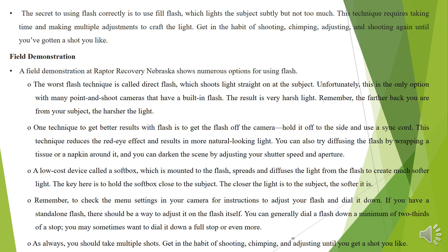You can also try diffusing the flash by wrapping a tissue or a napkin around it, and you can darken the scene by adjusting your shutter speed and aperture. A low-cost device called a softbox, which is mounted to the flash, spreads and diffuses the light from the flash to create much softer light. The key is to hold the softbox close to the subject — the closer the light is to the subject, the softer it is. Remember to check the menu settings in your camera to adjust your flash and dial it down. If you have a stand-alone flash, there should be a way to adjust it on the flash itself. You can generally dial a flash down a minimum of two-thirds of a stop, and you may sometimes want to dial it down a full stop or even more. As always, take multiple shots — get in the habit of shooting, chimping, and adjusting until you get a shot you like.